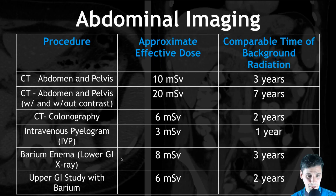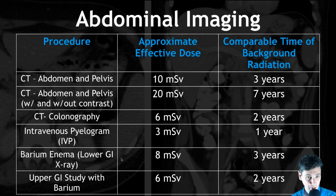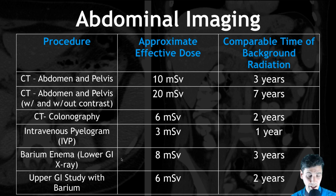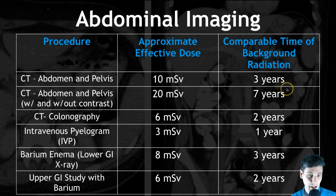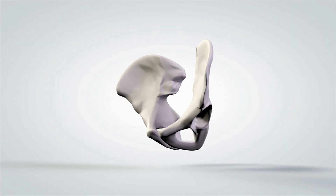For abdominal imaging, here are some standard procedures and their associated radiation doses from radiologyinfo.org through the RSNA. A CT of the abdomen and pelvis is about 10 millisieverts. Since 3 millisieverts equals one year of background radiation, that's about three and a third years — rounding to the nearest year, about three years of background radiation for an abdominal CT. If you do the abdomen and pelvis with and without contrast, that's twice as much: 20 millisieverts, which is about seven years.